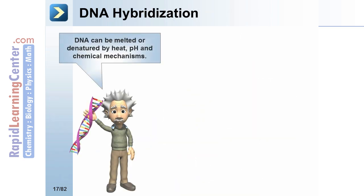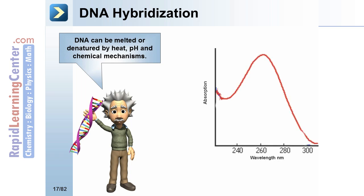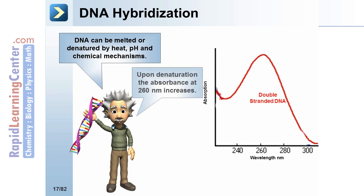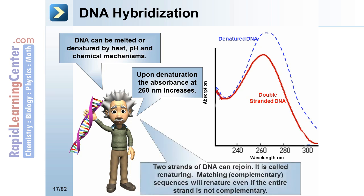DNA hybridization. DNA can be melted or denatured by heat, pH, and chemical mechanisms. Upon denaturation, the absorbance at 260 nanometers increases. Two strands of DNA can rejoin — a process called renaturing. Matching complementary sequences will renature even if the entire strand is not complementary.